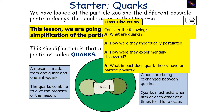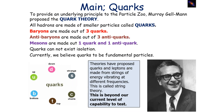What are quarks? How are they theoretically postulated? How are they experimentally discovered? And what impact does quark theory have on particle physics? To provide an underlying principle to the particle zoo, Murray Gell-Mann proposed the quark theory, which is that all hadrons are made from smaller particles called quarks.